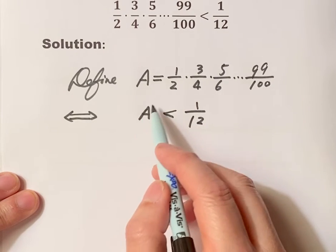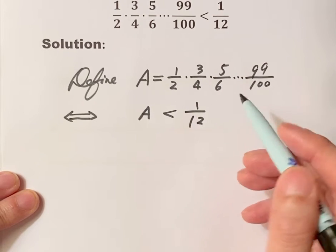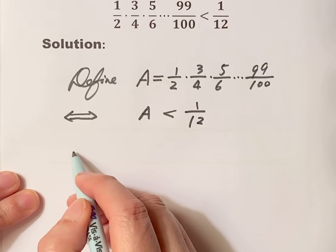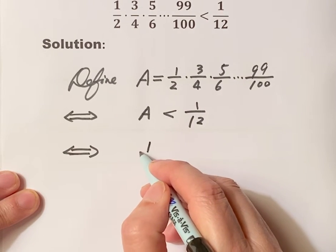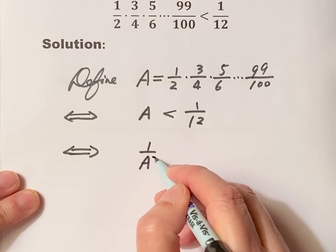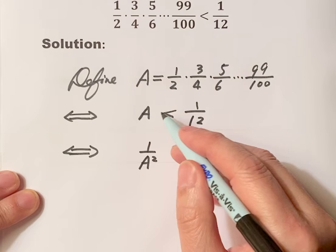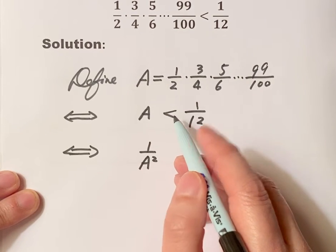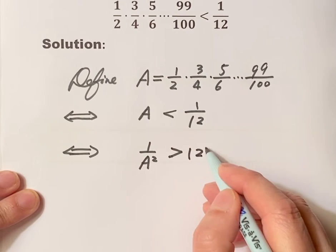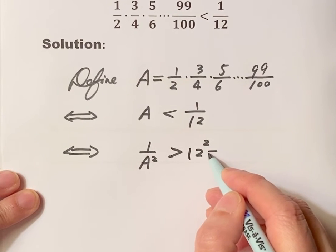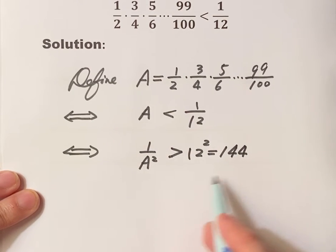We square both sides and interchange numerator and denominator. Then we have the following equivalent inequality: 1 over A squared. If we interchange numerator and denominator on both sides, we should change the direction of the inequality sign. That's 12 squared, which is 144. We only need to prove this.